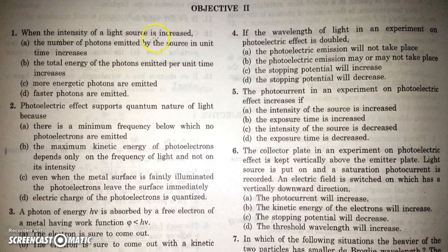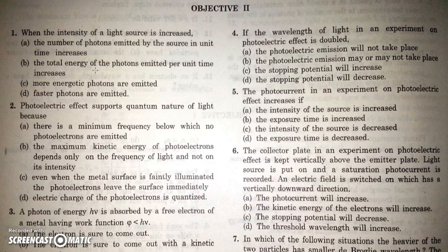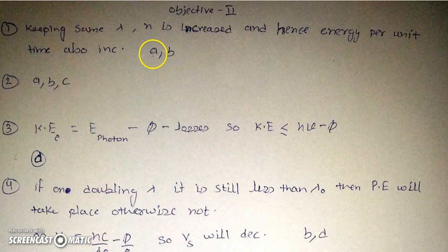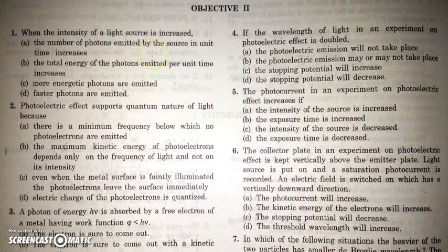When the intensity of a light source is increased, we can say the number of photons emitted by the source in unit time also increases. Intensity means energy per unit area, so we can increase the number of photons falling per unit area and total energy of photons will also increase. But when we say intensity of light, we mean that we are keeping the wavelength same — we are not changing the type of light. So wavelength is same and N is increased; hence the energy per unit time also increases. We have two correct options: A and B.